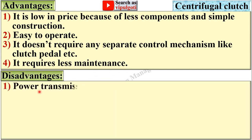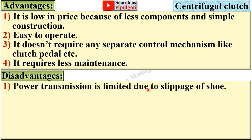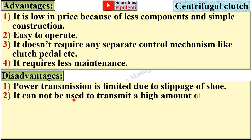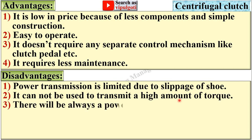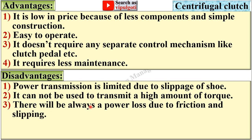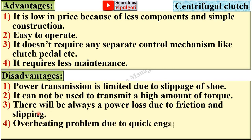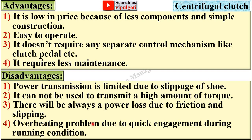Disadvantages of the centrifugal clutch: power transmission is limited due to slippage of the shoe, and it cannot be used to transmit a high amount of torque. There will always be a power loss due to friction and slipping, and there is an overheating problem due to quick engagement during running conditions.